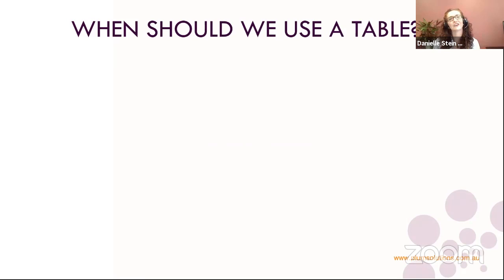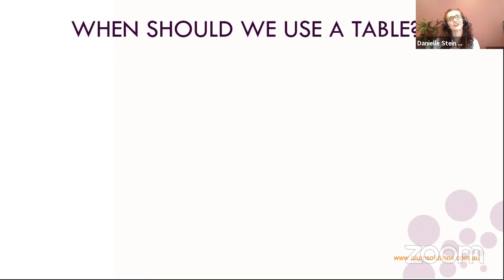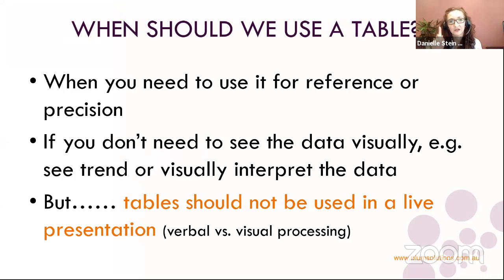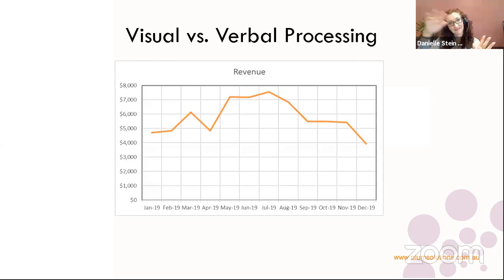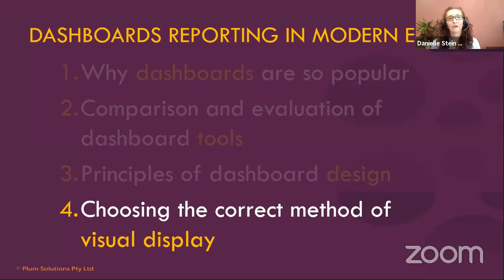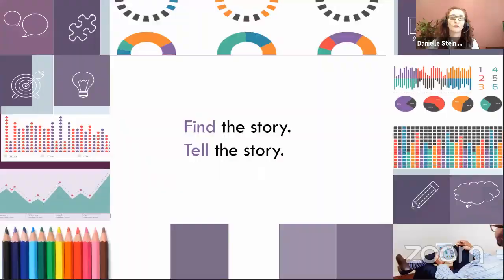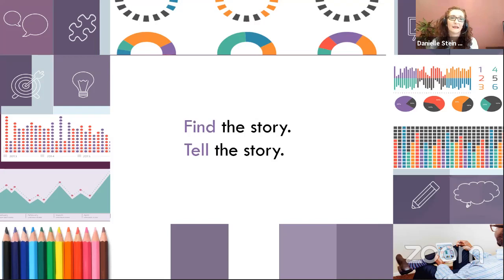If you're on a dashboard and want to show numbers, you can use tables for reference or precision. But you shouldn't show numbers in a live setting because it uses a different part of the brain — people have to process things verbally. It's a heck of a lot easier to show it visually. It's always good to use your visualization to find the story in the data, and then use that visual to tell your audience what that story is.